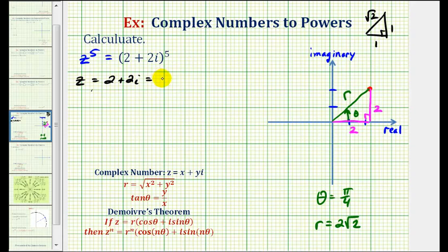So in polar form, we would have 2√2 times (cos(π/4) + i·sin(π/4)).